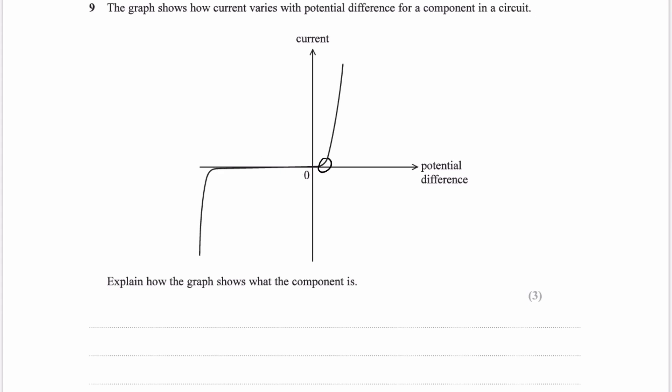You have a certain voltage where you have current suddenly increasing, so at that point you have the resistance decreasing significantly. And we have the same thing on the other side as well, but for a much higher voltage.